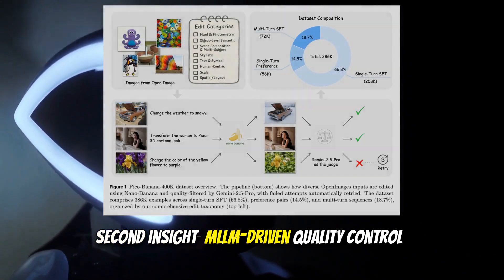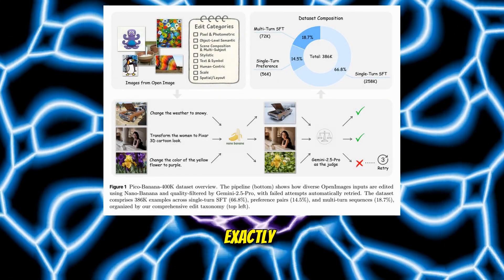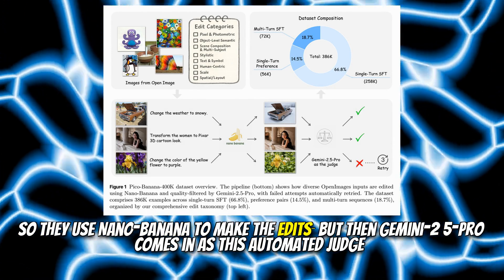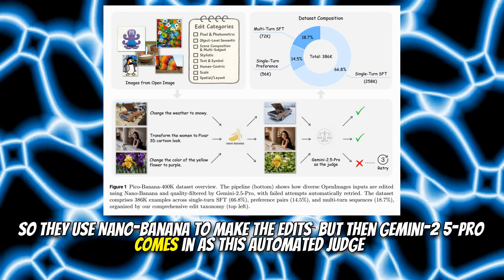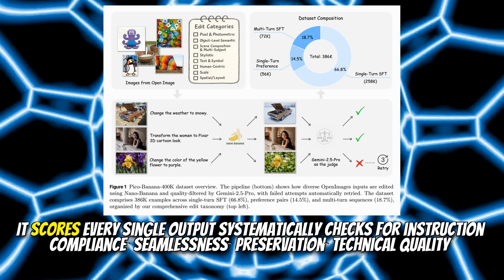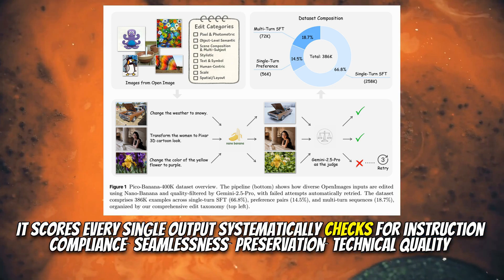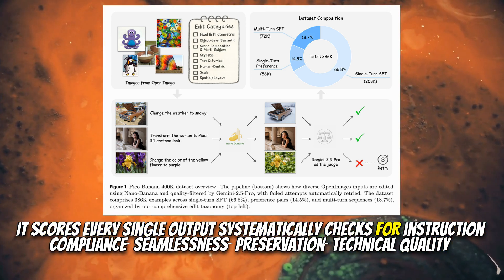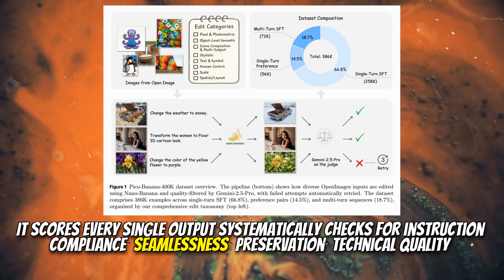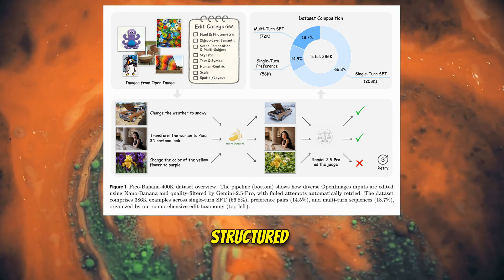Second insight: LLM-driven quality control. They use Nano Banana to make the edits, but then Gemini 2.5 Pro comes in as an automated judge. It scores every single output systematically, checking for instruction compliance, seamlessness, preservation, and technical quality.